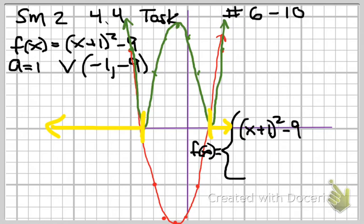So, we would write that negative infinity to negative 4 union 2 to infinity.